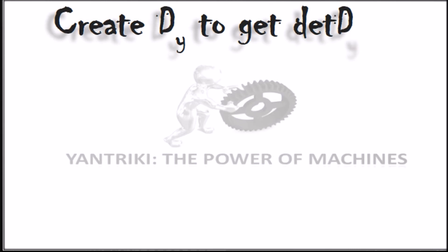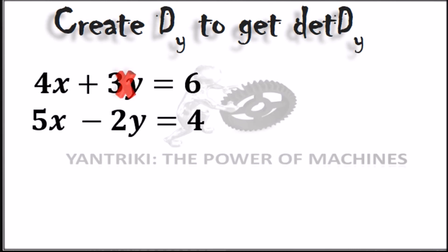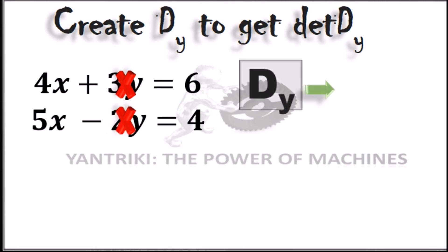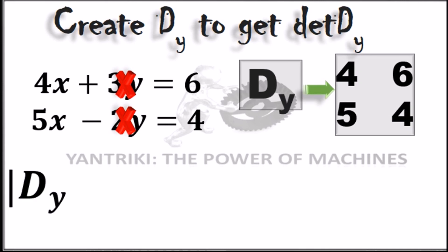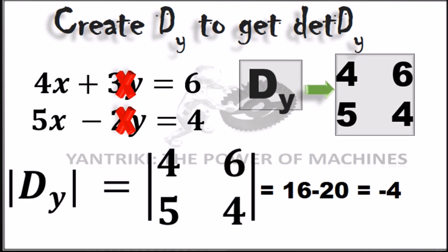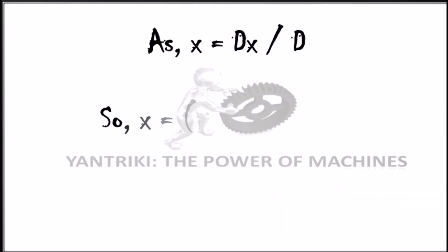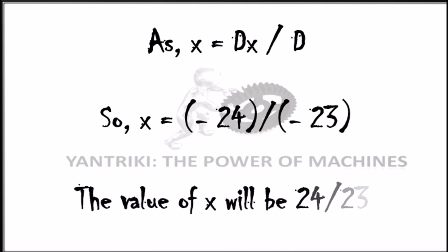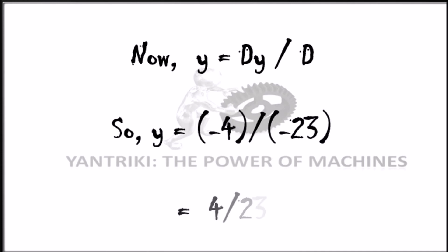Following the same technique, we find Dy by ignoring the coefficients of y: Dy = [4, 6; 5, 4], giving determinant of Dy = (4×4) − (6×5) = 16 − 30 = −14. Wait — the determinant of Dy is −14, though the speaker states −4. Since D is not equal to 0, we calculate x = Dx / D = −24 / −23 = 24/23, and y = Dy / D = 4/23.